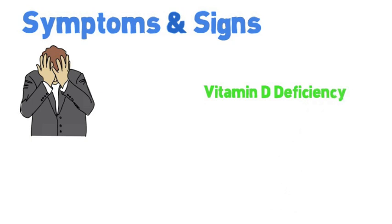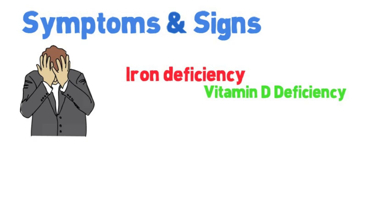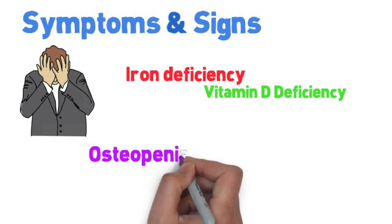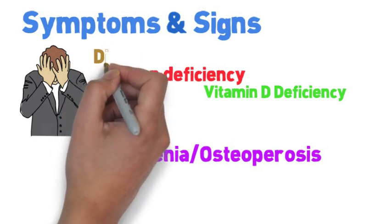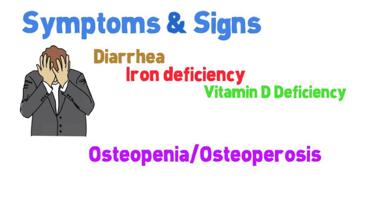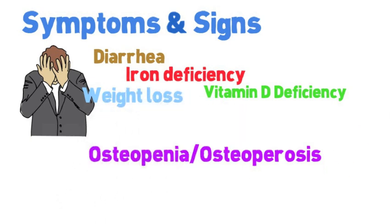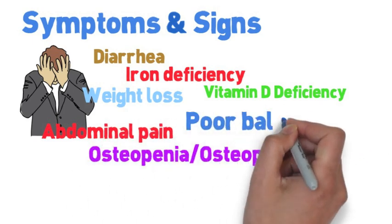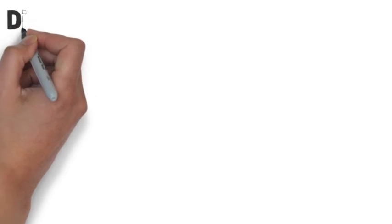For example, it can cause vitamin D deficiency and iron deficiency. It can also lead to poor deposition of calcium within the bones, causing osteopenia or osteoporosis, otherwise known as weak bones. In addition, you can have diarrhea, recurrent abdominal pain, and weight loss. You can also develop poor balance because of lack of B12 absorption and B12 deficiency, and finally fatigue. All these symptoms are associated with celiac disease.